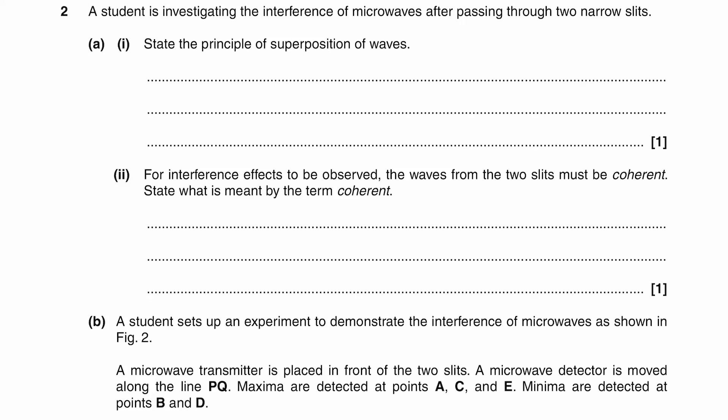A student is investigating the interference of microwaves after passing through two narrow slits. State the principle of the superposition of waves. So this is a simple definition. The principle of superposition states that when two waves meet at a point, the resultant displacement is the sum of the individual displacements of those two waves at that point.